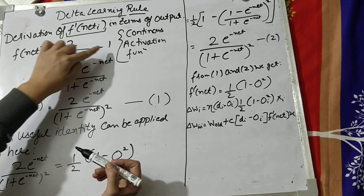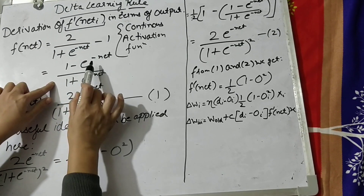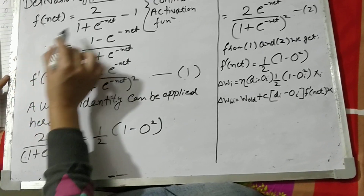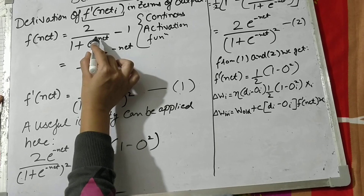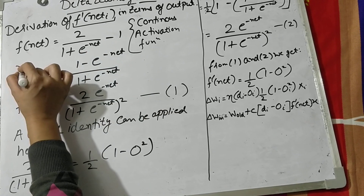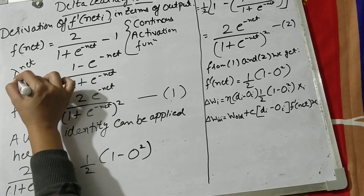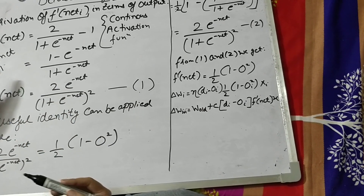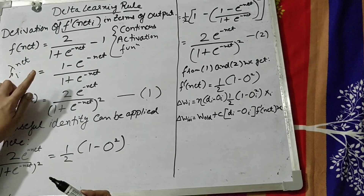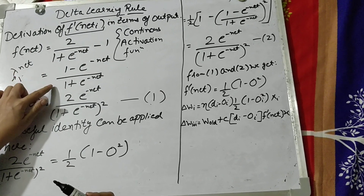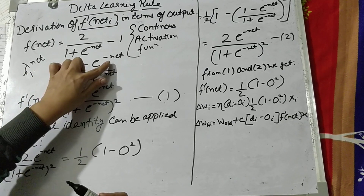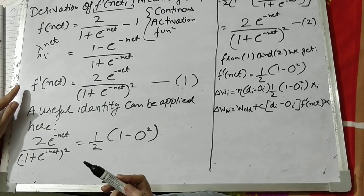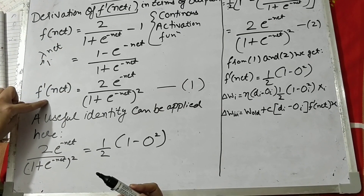If we further evaluate this series, we get (1 minus e raised to the power minus net) divided by (1 plus e raised to the power minus net). Here there is a formula: 1 plus e raised to the power minus net, minus lambda into net — but lambda is a constant term. By default we take lambda equal to 1, so we can reformulate it as (1 minus e^(-net)) divided by (1 plus e^(-net)).